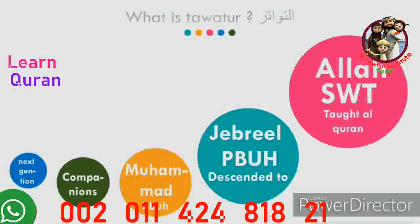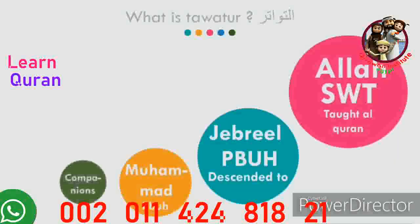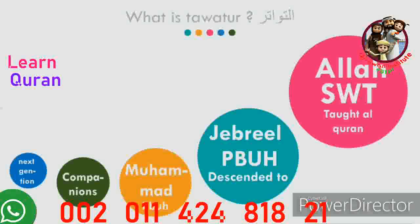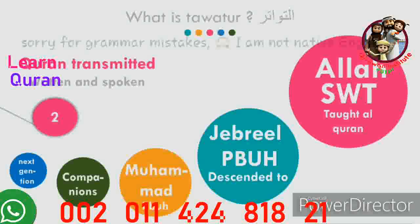Then the companions taught Al-Quran to the next generations, and the next generations continued in the same way. Al-Quran was transmitted to us by two different ways: written and spoken. Not only the words of the Quran are transmitted to us — the way of reading and the way of reciting the words is also transmitted to us.